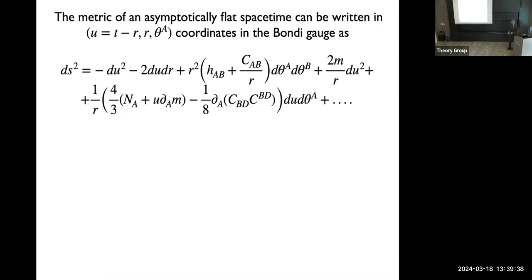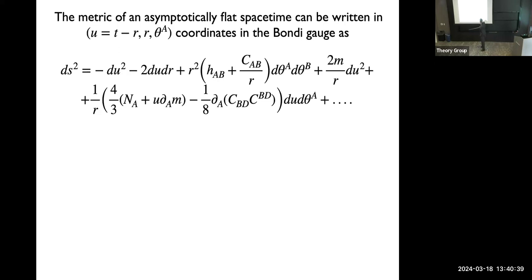Let's start with the metric. I use a retarded time u, a radius r, and two angular coordinates theta_a that parameterize what is called the celestial sphere. The metric far away from a source in an asymptotically flat spacetime can be written in a particular gauge called the Bondi gauge. There are some leading terms — r-squared times h, which is just flat spacetime — and the effect of the gravitational fields is contained in some leading terms. C_ab is called the shear. M is a function of retarded time and the angular variable, called the mass aspect. There are also other quantities that are important, because they parameterize angular momentum.